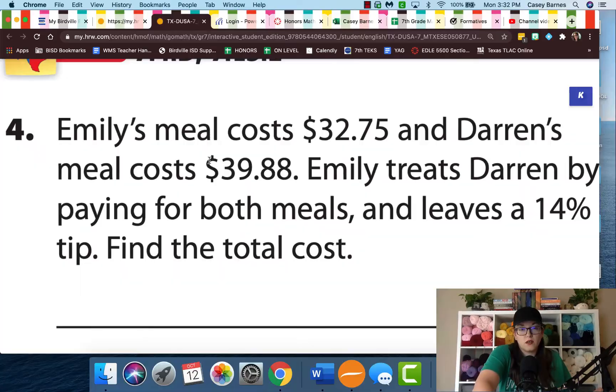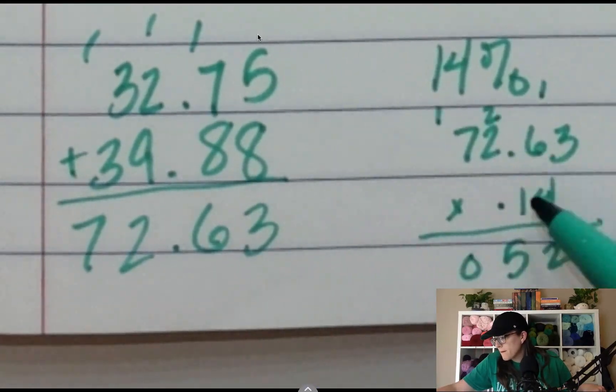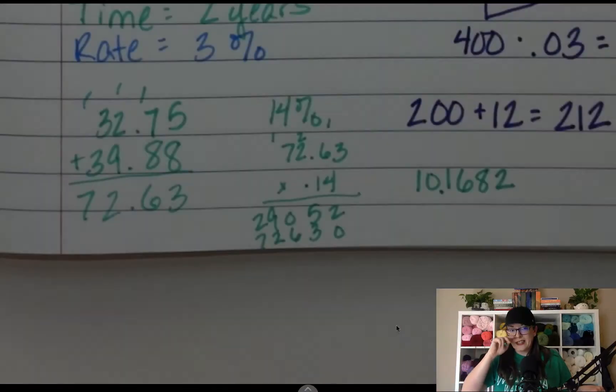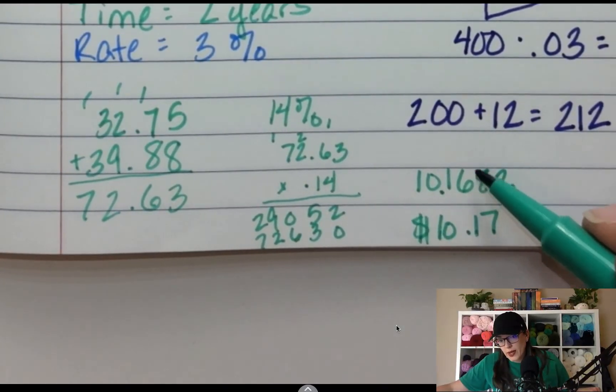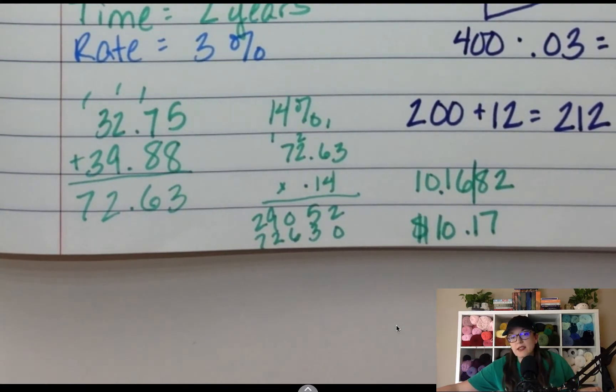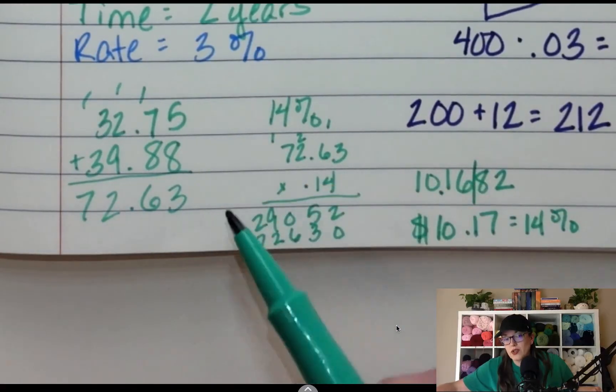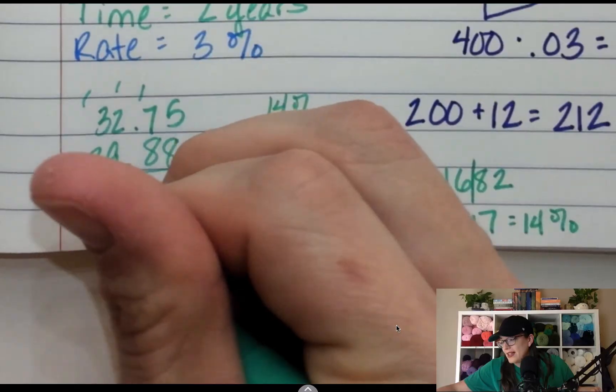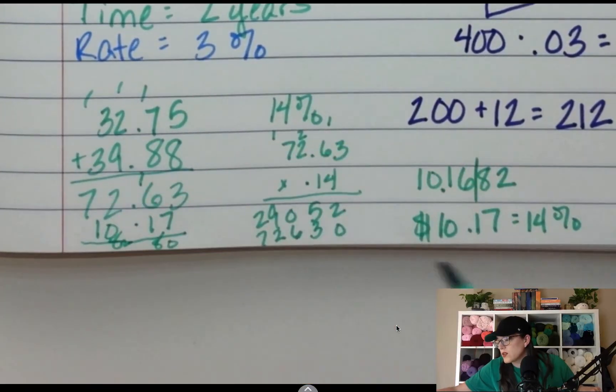Let's throw in something with percents real quick. This is a good one. Emily's meal costs $32.75 and Darren's meal costs $39.88. Emily treats Darren by paying for both meals and leaves a 14% tip. Find the total cost. So the percent is $10 and 17 cents because this is money. So I have to round after this digit right here. And so I have $10 and 17 cents is my 14%. This is 14%. I have to add this to the total. So if the meals together was $72.63, I have to add $10 and 17 cents to that to get my final answer. So it's $82.80.